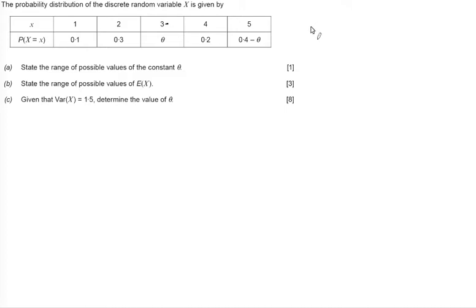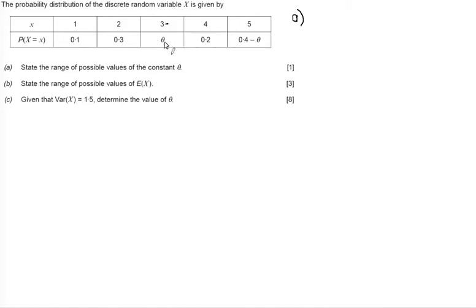Part A wants us to state the range of possible values for theta. This comes from thinking about what values theta can hold, knowing that all probabilities must lie between 0 and 1 — they can be equal to 0 or 1 but cannot go outside those bounds. From X equals 3, we know theta cannot be less than 0, so we put 0 less than or equal to theta.